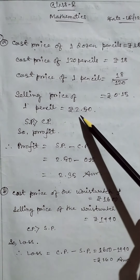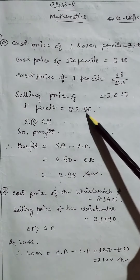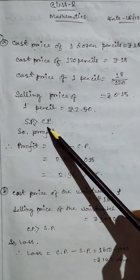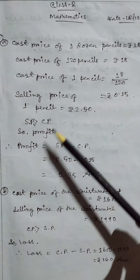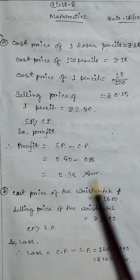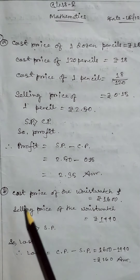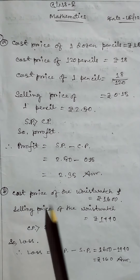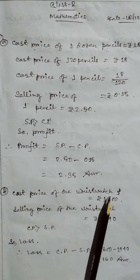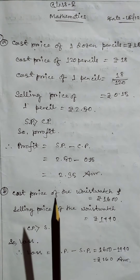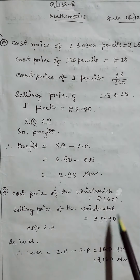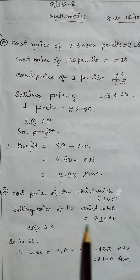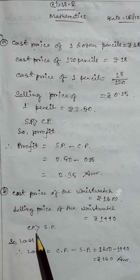Selling price of one pencil equals rupees 2.50. Since selling price is greater than cost price, there is a profit. Profit equals rupees 2.35.